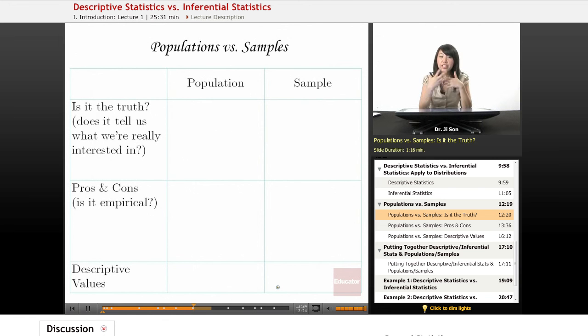So it behooves us to sort of figure out, okay, then what's the difference between the population and the sample distribution? Well, here, it might be helpful to just think of the population as sort of like the truth. This is what we're really interested in, right? So is it the truth? This is the truth.